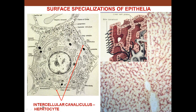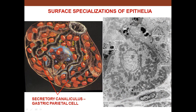One specialization is the intracellular canaliculus — in the bile canaliculus, a special channel keeps blood separate from bile, seen as channels between hepatocytes. In the parietal cell of the stomach, which produces hydrochloric acid, the plasma membrane has deep enfoldings within the cell called a secretory canaliculus, so the cell can discharge hydrogen and chloride into that space to make hydrochloric acid without interfering with intracellular processes.